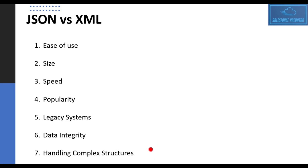That is why XML is still preferred in areas where data security and data integrity are top priorities. XML also has a better ability to handle complex data structures because it can define structure, use schemas, use complex tags, add comments, and add attributes to explain the data — giving it better capability to handle complex structures compared to JSON.